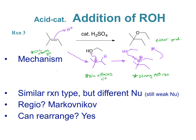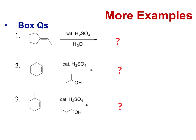Now let's do a few more examples to make sure we can predict products. Pause the video and write down the box questions, then try the first one. For number one, I'm going to draw the carbons — in this case it's not going to rearrange. For a shortcut, I'll draw just the carbocation, which would be a tertiary carbocation. Then the product would have the OH on that carbon because we're using water.